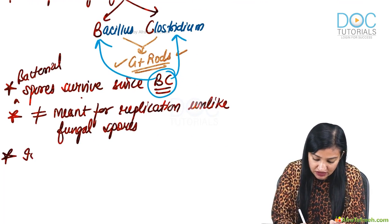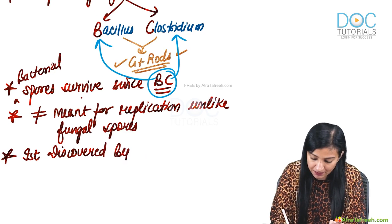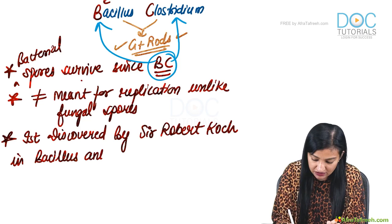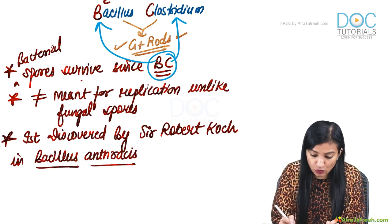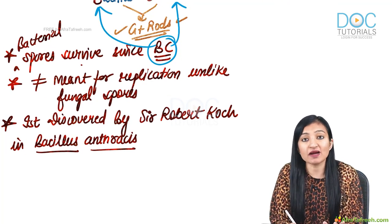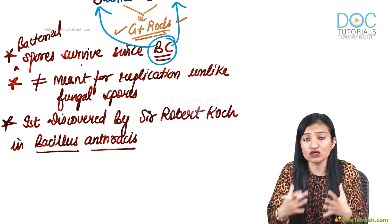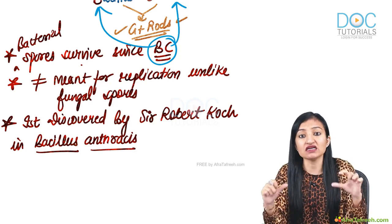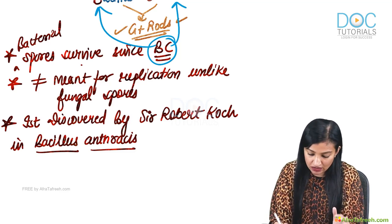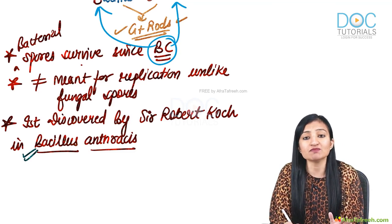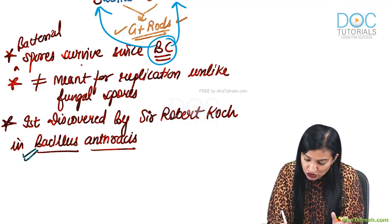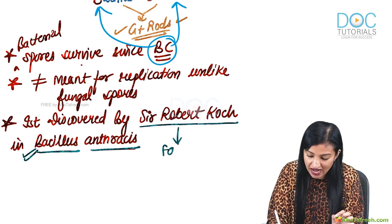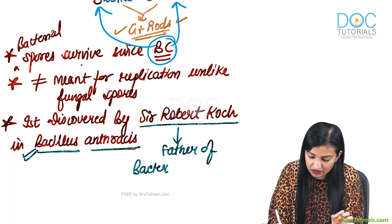Bacterial spores were first discovered by Sir Robert Koch in the bacterium Bacillus anthracis. Bacillus anthracis is the largest bacterium — it has a big ego, so it is non-motile. Being the biggest bacterium, it was also the very first bacterium seen under the microscope, and spores were also discovered in the same bacterium. Sir Robert Koch is regarded as the father of bacteriology.